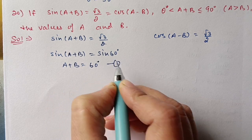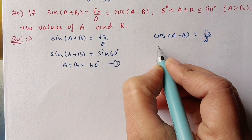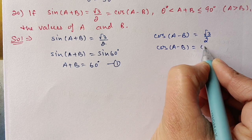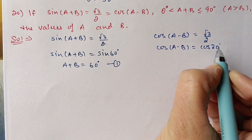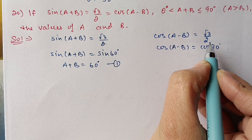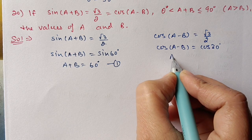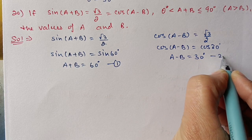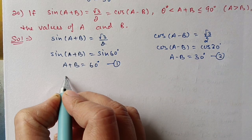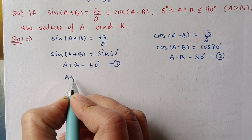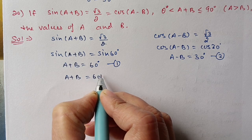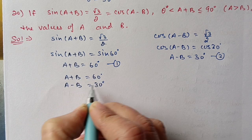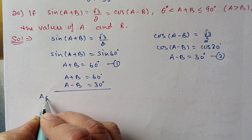For cos, root 3 by 2 is the value for cos 30 degrees, so a minus b equals 30 degrees — this is the second equation. Now we solve these two equations to find a and b. Adding the two equations: 2a equals 90, so a equals 45 degrees.